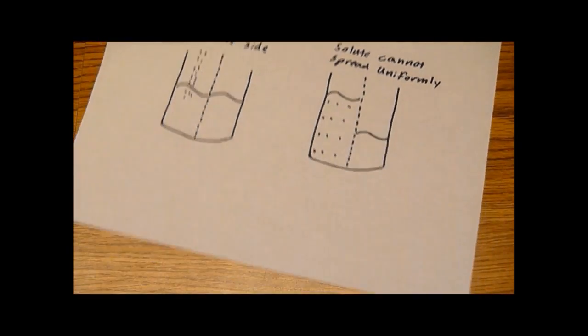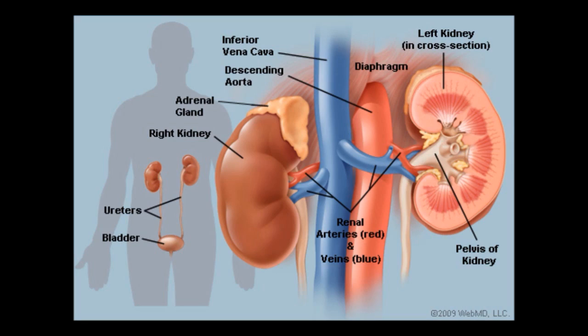This is called osmotic pressure. Osmotic pressure is useful because it's the primary mechanism for a properly functioning kidney. And also reverse osmosis is used for water filtration.